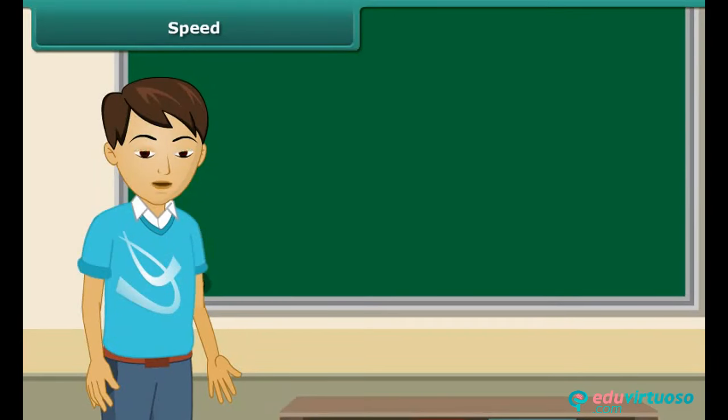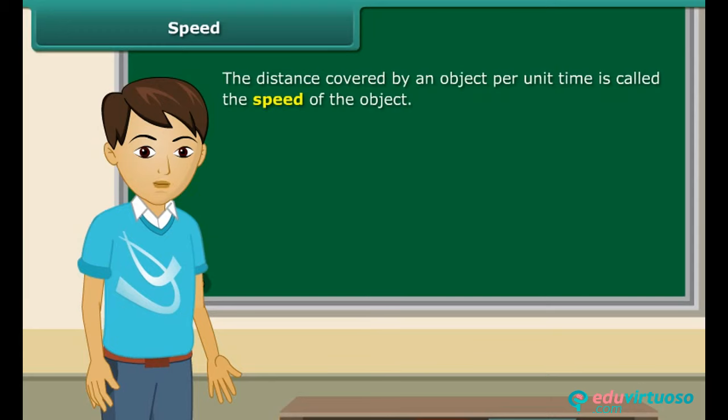The most convenient way of finding out which object moves faster than the others is to calculate and compare the distances covered by all the objects per unit time. The object that covers a greater distance per unit time is quite obviously faster. The distance covered by an object per unit time is called the speed of the object.